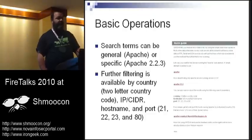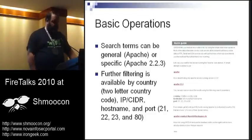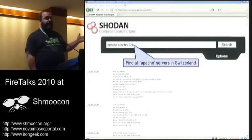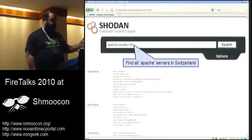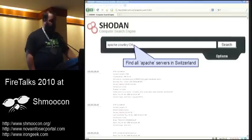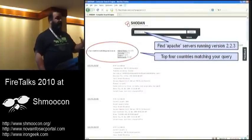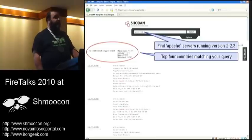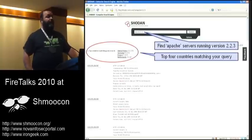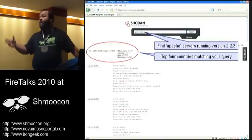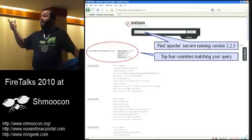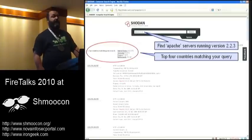For example, to find all Apache servers in Switzerland, you'd search: Apache country:ch — using whatever the two-letter country code is for the country you're looking for. For Apache servers running version 2.2.3, just search: Apache 2.2.3. If you don't include a country, the top four results by country will be displayed at the top of the page. For that result: United States 322,000, Germany 53,000, and so on. It gives you an idea of what's available.